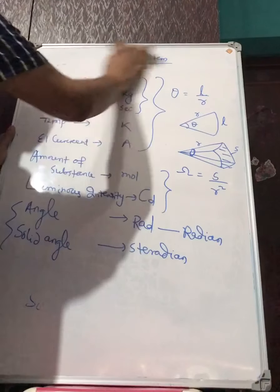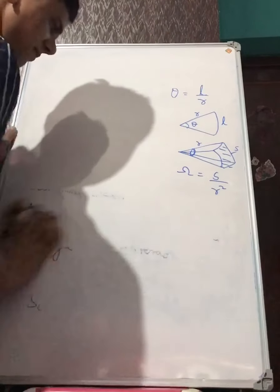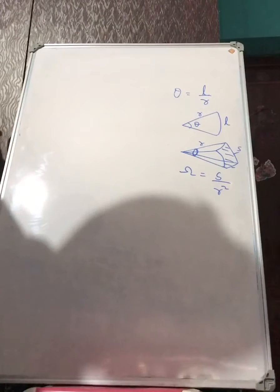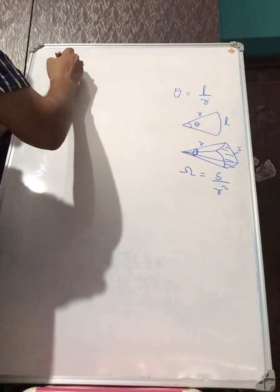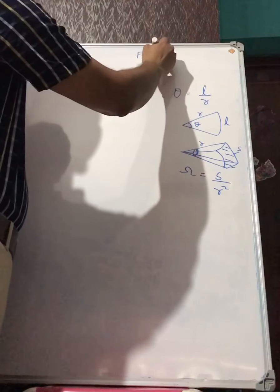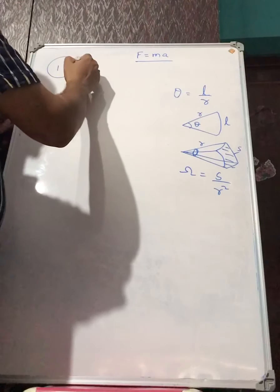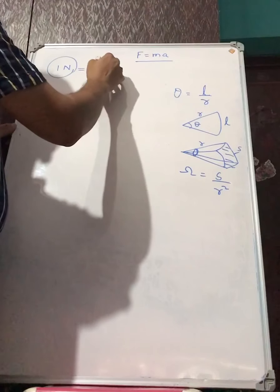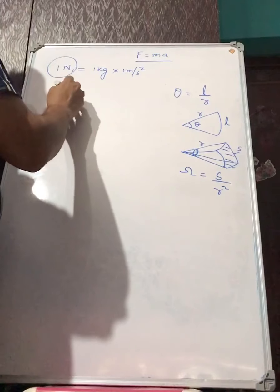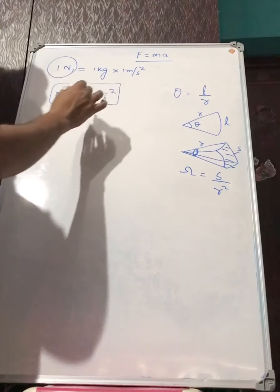Now let us discuss some of the derived units. Derived physical quantities have units called derived units. For example, Newton is the unit of force. We know F = ma, so one Newton equals one kilogram times one meter per second squared. In short, Newton can be written as kg·m·s⁻².